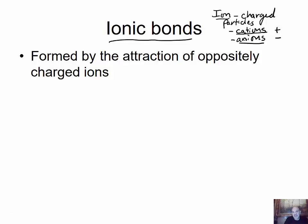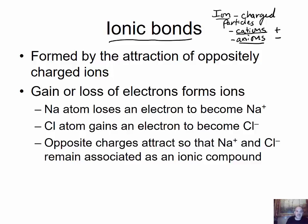If you have oppositely charged ions, cations and anions are going to attract each other, which causes ionic bonds. This gives an example of a neutral sodium atom reacting with a chloride atom. The sodium is going to lose an electron, which causes it to become positive, and the chloride is going to gain an electron, which causes it to become negative. The oppositely charged atoms will then bind.